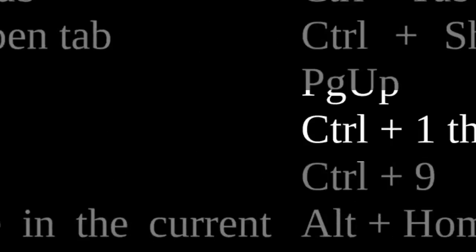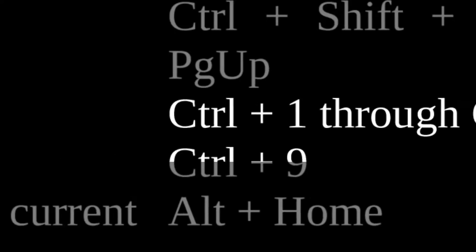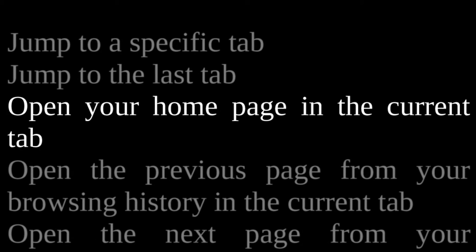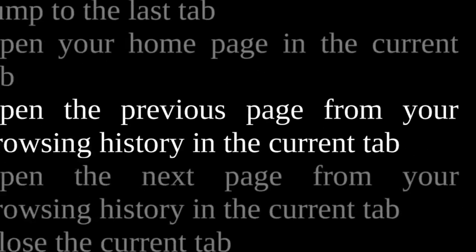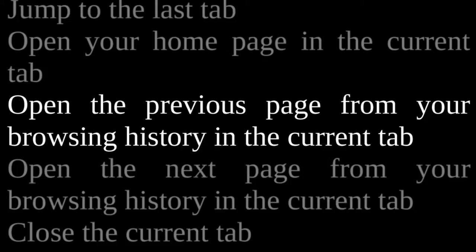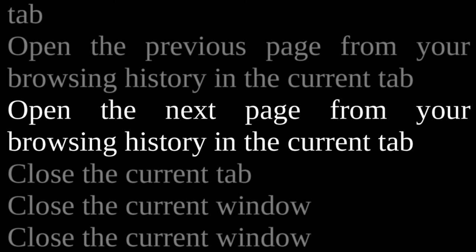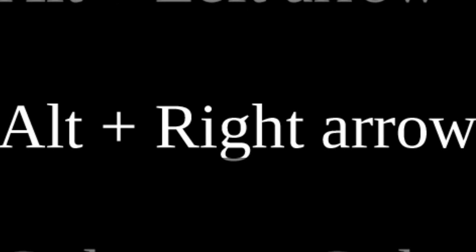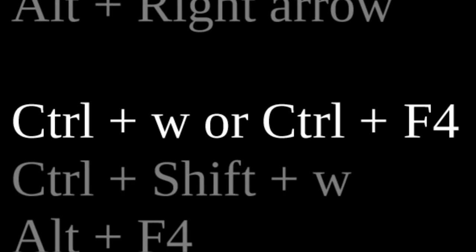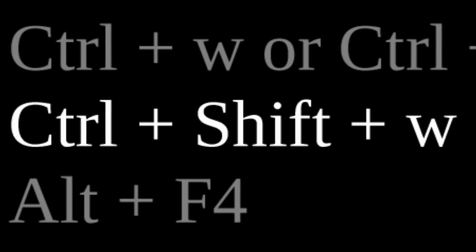To jump to a specific tab, press Ctrl 1 through Ctrl 8. To jump to the last tab, press Ctrl 9. To open your home page in the current tab, press Alt Home. To open the previous page from your browsing history, press Alt left arrow. To open the next page from your browsing history, press Alt right arrow. To close the current tab, press Ctrl W. To close the current window, press Ctrl Shift W or Alt F4.